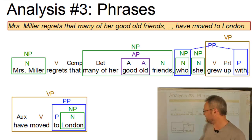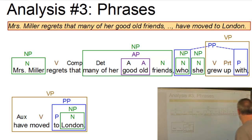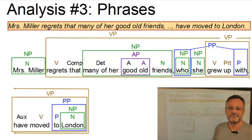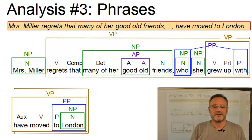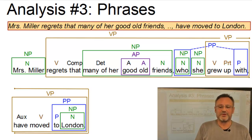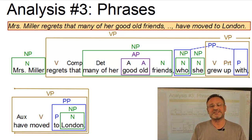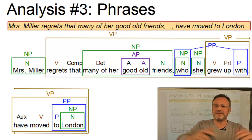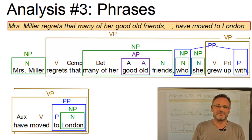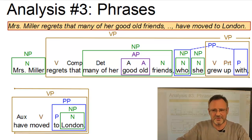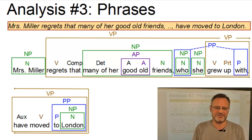On the highest level we have another verb phrase with regrets as the head and everything that follows as a modifier. So we have several nested phrasal categories.